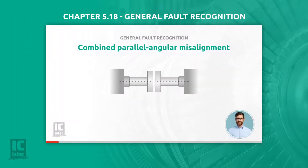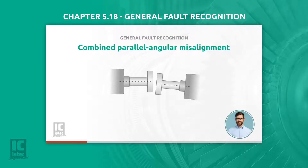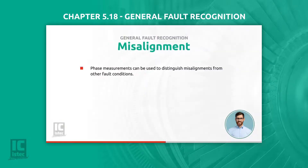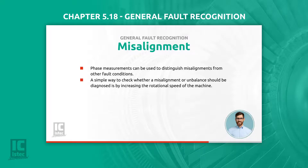In reality, most misalignments are a combination of both parallel and angular misalignment. In severe cases of misalignment, we can also see peaks at other frequencies, as can be seen in this FFT spectrum. Phase measurements can be used to distinguish misalignments from other fault conditions. A simple way to check whether a misalignment or unbalance should be diagnosed is by increasing the rotational speed of the machine.